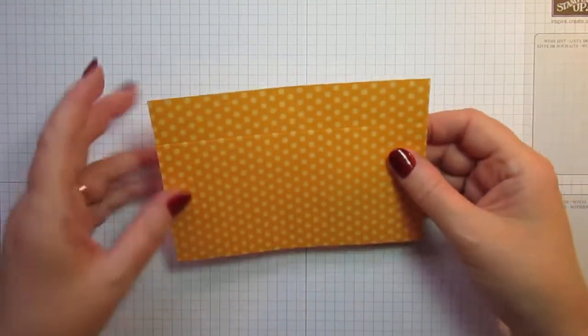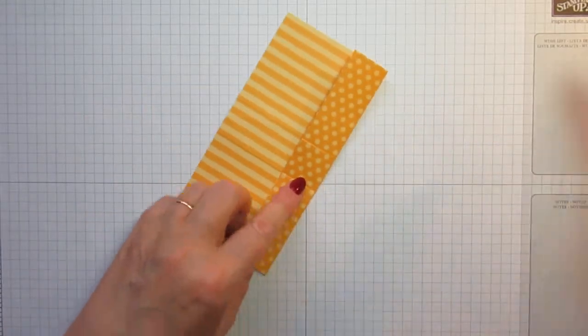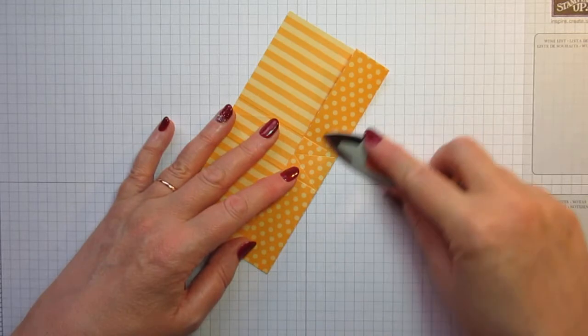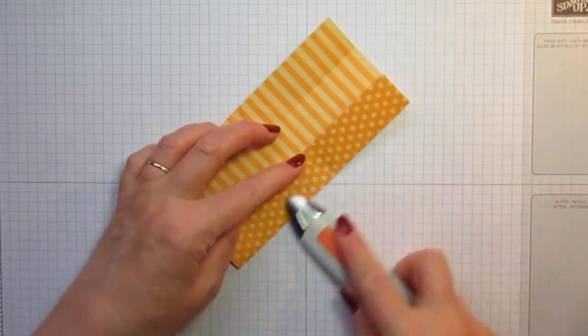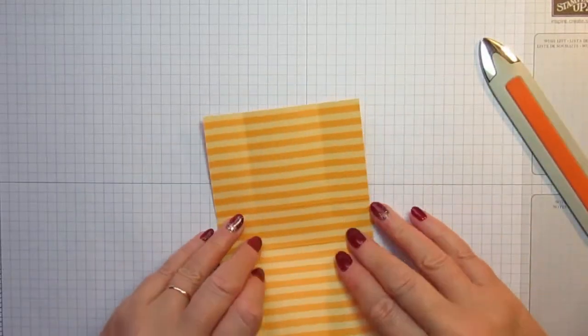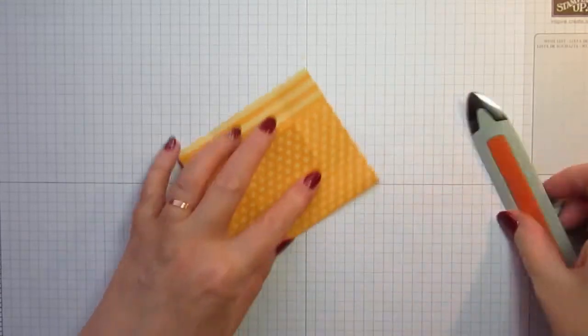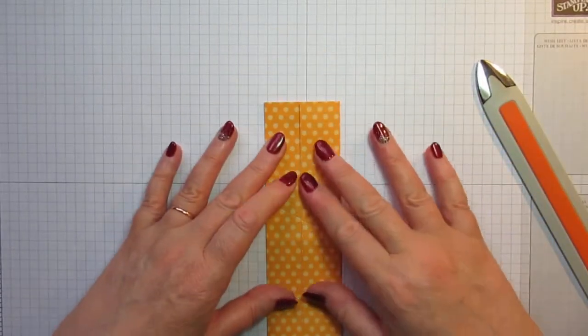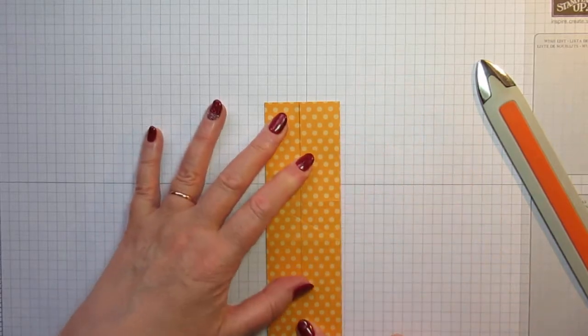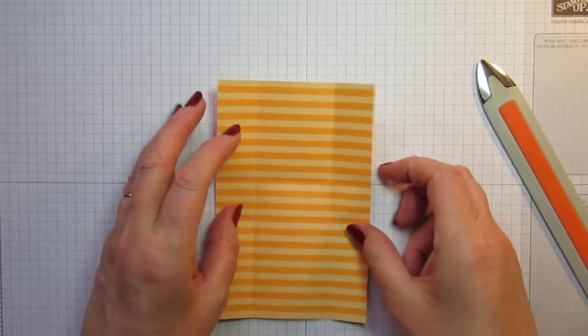What you want to do now is fold and burnish on all your score lines. You don't have to press too hard because it is designer series paper. Once you've done your scoring, you should be able to pop both of these over and join them together in the middle.